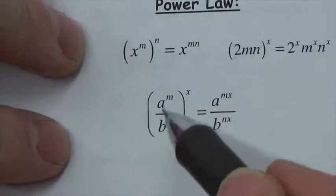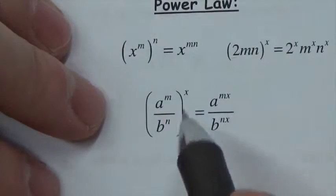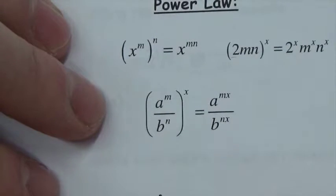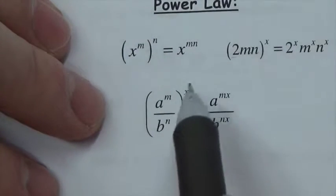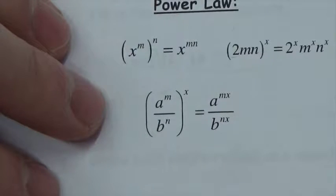The same thing applies to a quotient: you can distribute the power to both the numerator and the denominator. That's the rule for that.